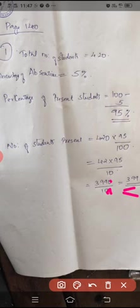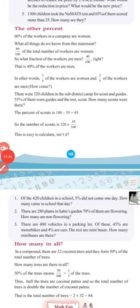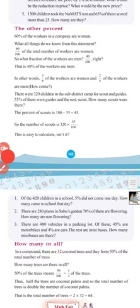399 students are present. Moving to the next problem — second problem: there are 280 plants in Sabu's garden. 70 percentage of them are flowering. How many are non-flowering?